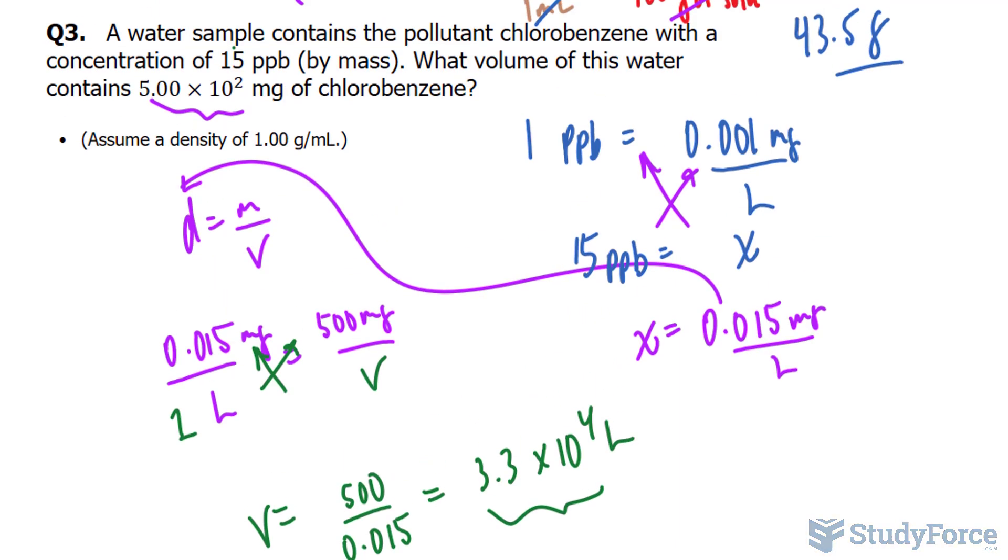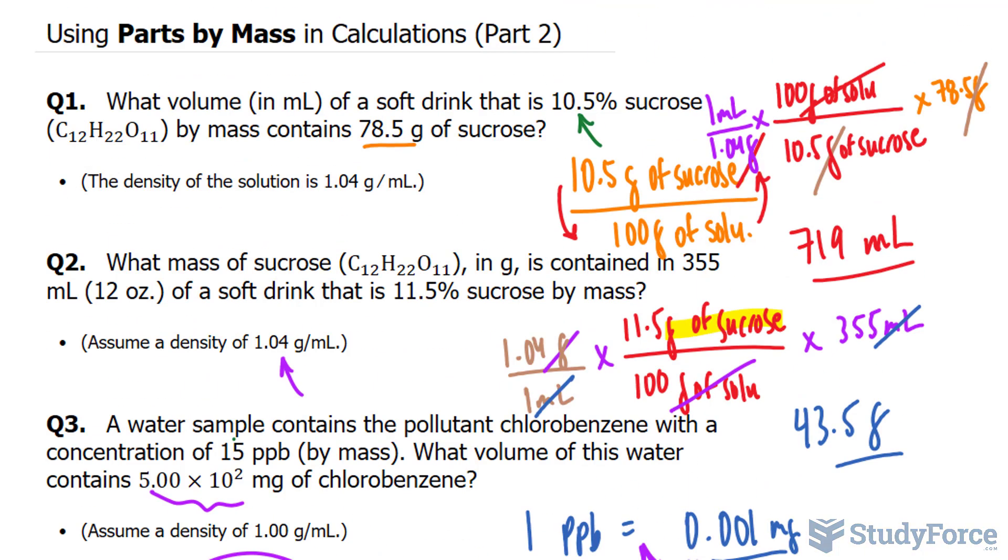So you need this many liters of water at that concentration of the pollutant to end up with 500 milligrams of chlorobenzene. And there you have it. That is how to use parts by mass in calculations.